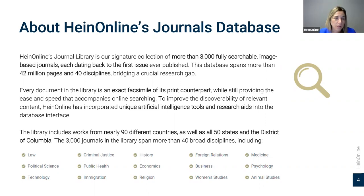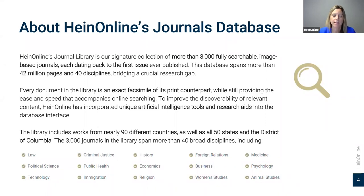Over 42 million pages are included in the Law Journal Library across 40 disciplines, including criminal justice, history, economics, religion, women's studies, and medicine. The subject area coverage is extensive. As we continue to add new journals, we're also working with commercial publishers. We have law reviews, university journals, and HeinOnline, but we've also been working a lot with commercial publishers recently.